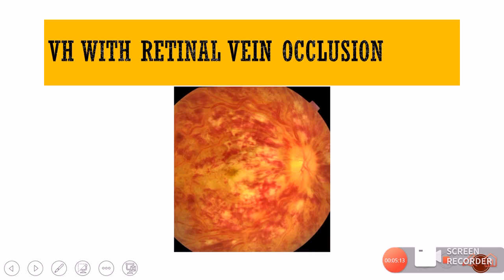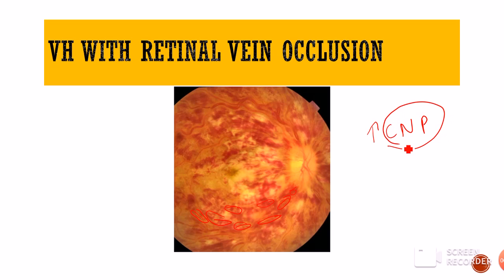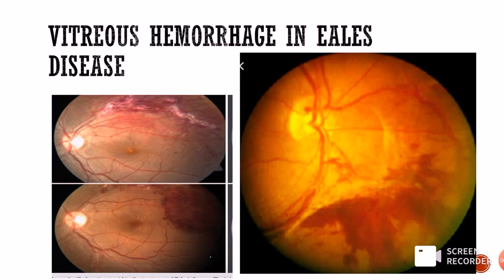Vitreous hemorrhage can also occur in retinal vein occlusion. In central retinal vein occlusion, the typical tomato-splash appearance is caused by flame-shaped hemorrhages, which are intra-retinal hemorrhages rather than vitreous hemorrhages. However, in the setting of ischemia and increased capillary non-perfusion areas, retinal ischemia sets in, neovascularization starts, and this neovascularization can bleed into the vitreous cavity leading to vitreous hemorrhage.